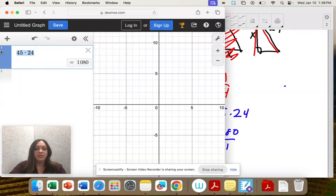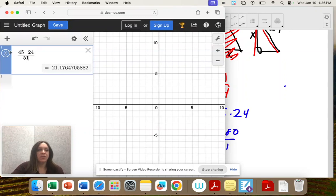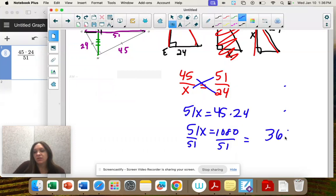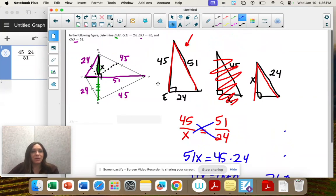So 1080 divided by 51 as a fraction is 360 over 17. I didn't use the decimal because it doesn't tell me to round. So this length is 360 over 17.